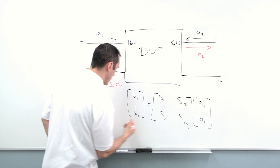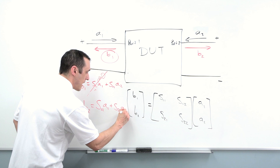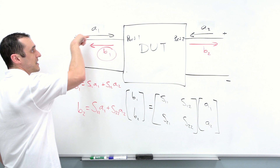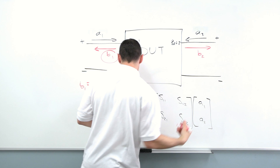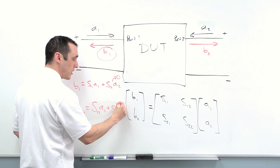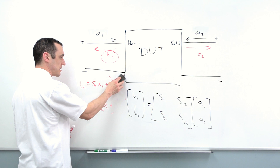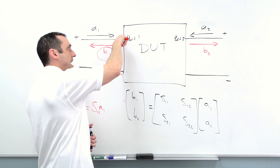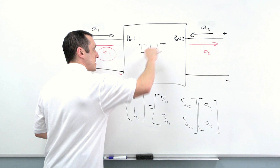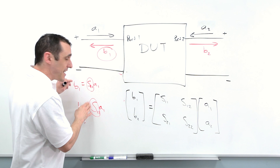When you look at S-parameter measurements, you're actually looking at B2. If I write out the equation for B2, I have S21·A1 plus S22·A2. Typically what we do with an actual measurement is we send in A1 and then measure B1 and B2 — how much is lost from port one, and how much transmits through the device and out of port two. So we keep A2 quiet. With A2 equal to zero, those terms go away, leaving just S11·A1 and S21·A1.